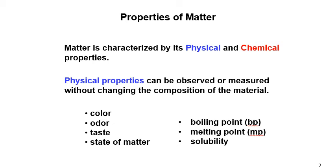The properties that you have for any chemical substances — regarding the definition you see here in this slide — it says physical properties can be observed or measured without changing the composition of the materials. I'm going to talk about each part of this definition. It says physical property can be observed or measured, so let me talk about these two types of activity.